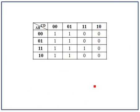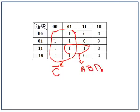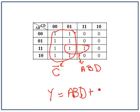Let's look at another example. Here we have a group of 8 — let's circle that. What doesn't change? A changes, B also changes, C is 0 in all 8 cells so C is 0, and D changes. Then for the remaining cell, we can create a group of 2 by overlapping, which represents A=1, B=1, D=1. So the expression is Y equals A·B·D or C̄.